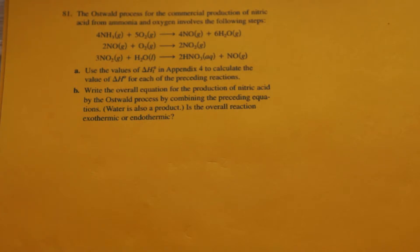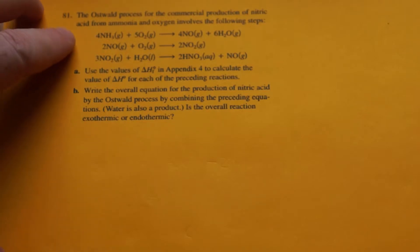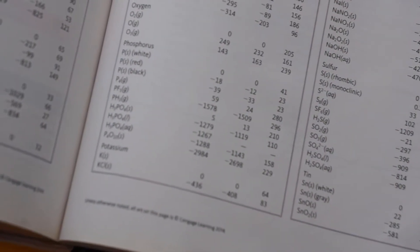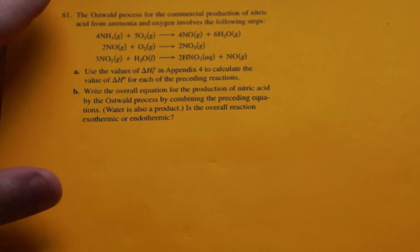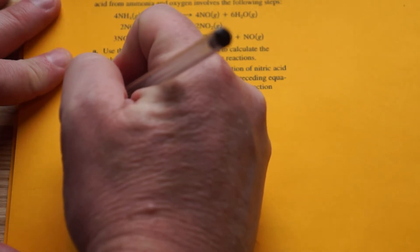This is Chapter 6, number 81, Zumdahl edition 9. It discusses the Ostwald process for making nitric acid. We have to use the heats of formation from Appendix 4 to figure out ΔH for each of the three reactions. The tables in the back of the book list compounds and elements along with their phases — phases are very important. For each reaction, you do products over reactants: look up the values and compute ΔH that way.